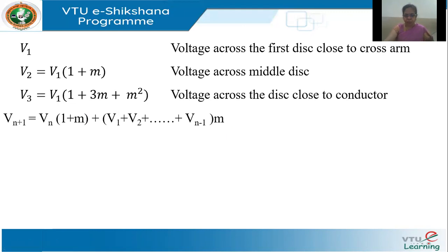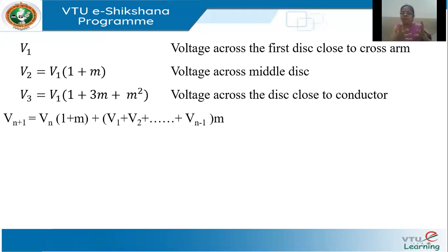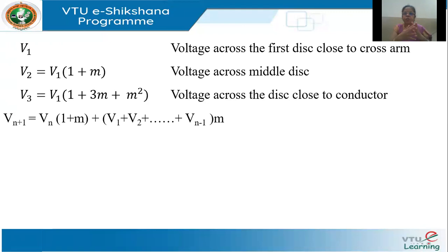For example, if you have 5 discs, then V5 = V4·(1 + m) + (V1 + V2 + V3)·m. If you have 7 discs, then V7 = V6·(1 + m) + (V1 + V2 + V3 + V4 + V5)·m. You can easily write the expression for any number of discs. From an examination point of view, you may be asked to solve for a maximum of 3 or 4 discs.